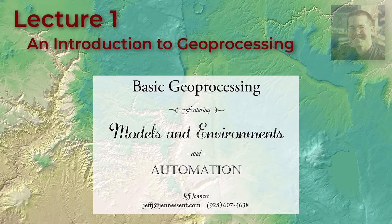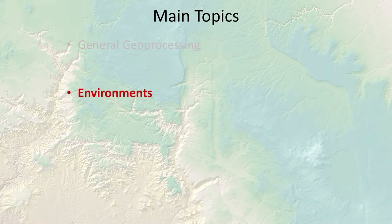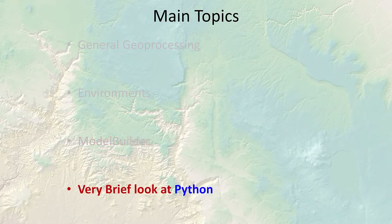Hello everybody, this is Jeff Janess and welcome to our first lecture on geoprocessing in ArcGIS Pro. Through the course of this lecture we're going to cover four general topics: general geoprocessing and what the tools are, environments which are extra parameters you can set when running a tool, model builder which is a way of stringing tools together, and a quick look at Python which is Esri's current programming language of choice.